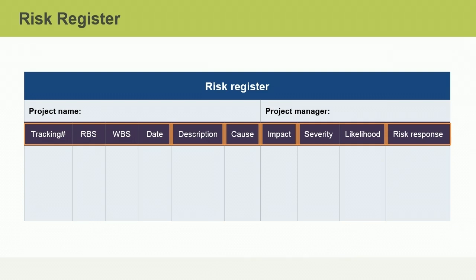It includes a description of each risk, its potential impact, and its root causes. A risk register generally contains several columns of information.